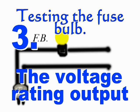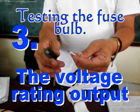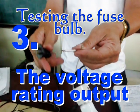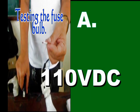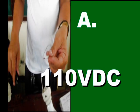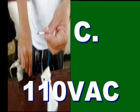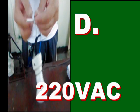Number 3. What is the voltage rating output of our fuse bulb? A. 110V DC, B. 220V DC, C. 110V AC, and D. 220V AC